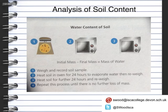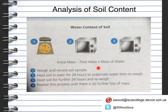The second method is for looking at the water content in soil. First you weigh and record the mass of the soil sample. You then heat it in an oven for about 24 hours, which evaporates the water. Then you re-weigh the soil and heat for a further 24 hours and repeat. You keep doing this until there is no further loss of mass — at that point, no more water remains to evaporate.